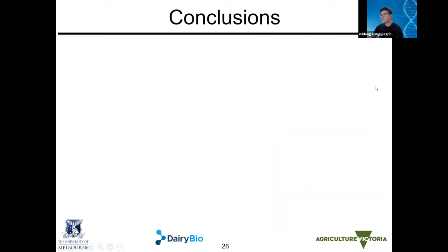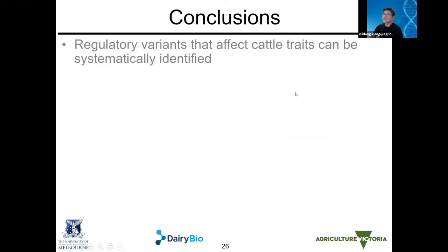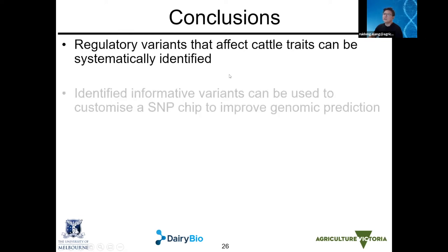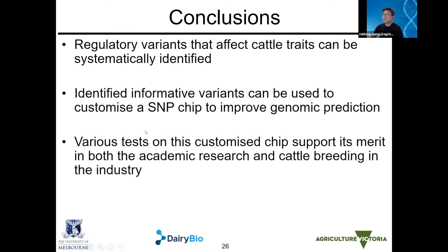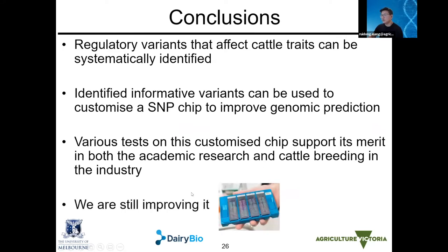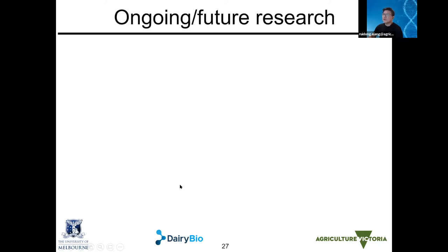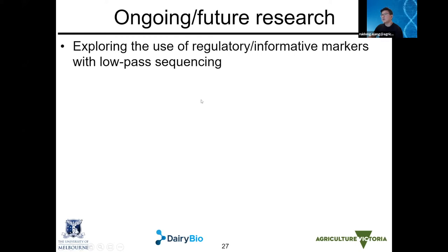In conclusion: regulatory variants affecting cattle traits can be systematically identified and used to customize SNP chips to improve genomic prediction. Various tests show the customized chip works both in academic settings and in Australian industry breeding programs. We are still improving it, hoping to increase accuracy further in the next version, and are currently exploring the use of these regulatory and informative variants with low-pass sequencing for greater flexibility in customizing panels. We also plan to map more regulatory variants as new functional genomic activities ramp up — BovReg, FarmGTEx and others — targeting not just production traits but also welfare, fertility, disease resistance, and breeds beyond Holstein and Jersey.